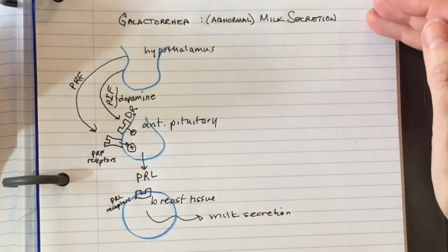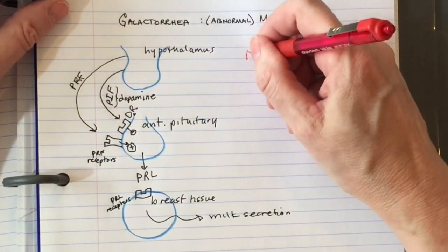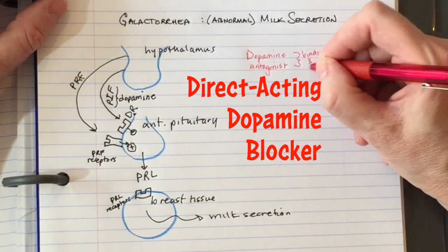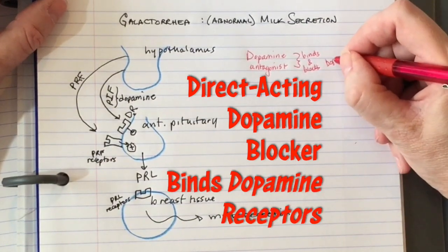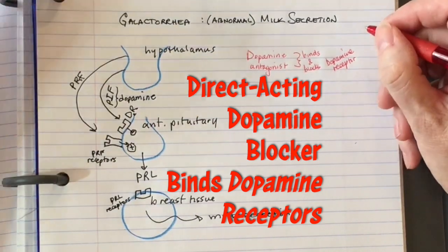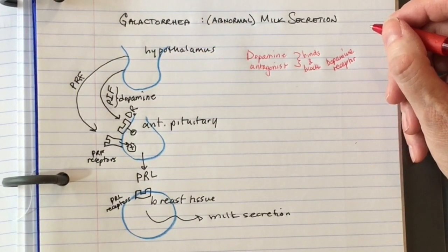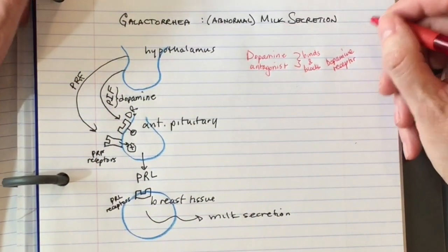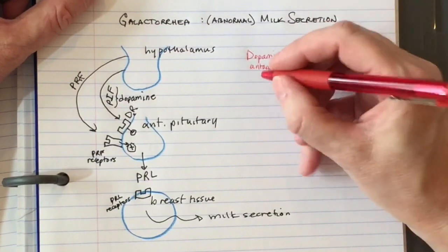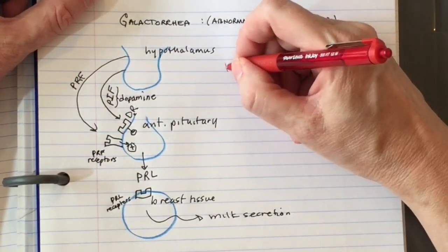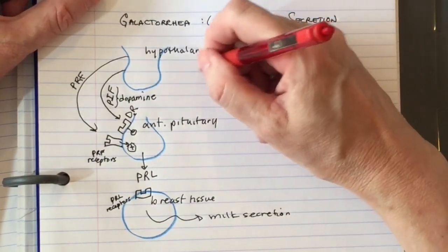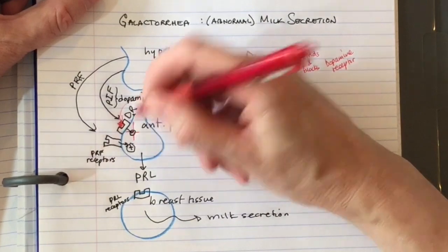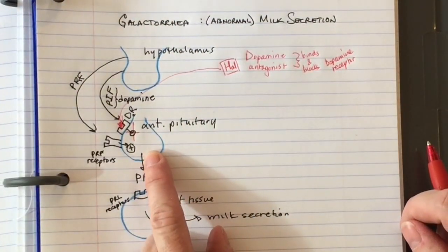What happens when we have an anti-dopamine drug, a dopamine antagonist? First, what kind of receptor does it bind and block? Dopamine receptors, correct. It binds and blocks dopamine receptors in areas that reduce vomiting, reduce psychosis, and in the anterior pituitary.